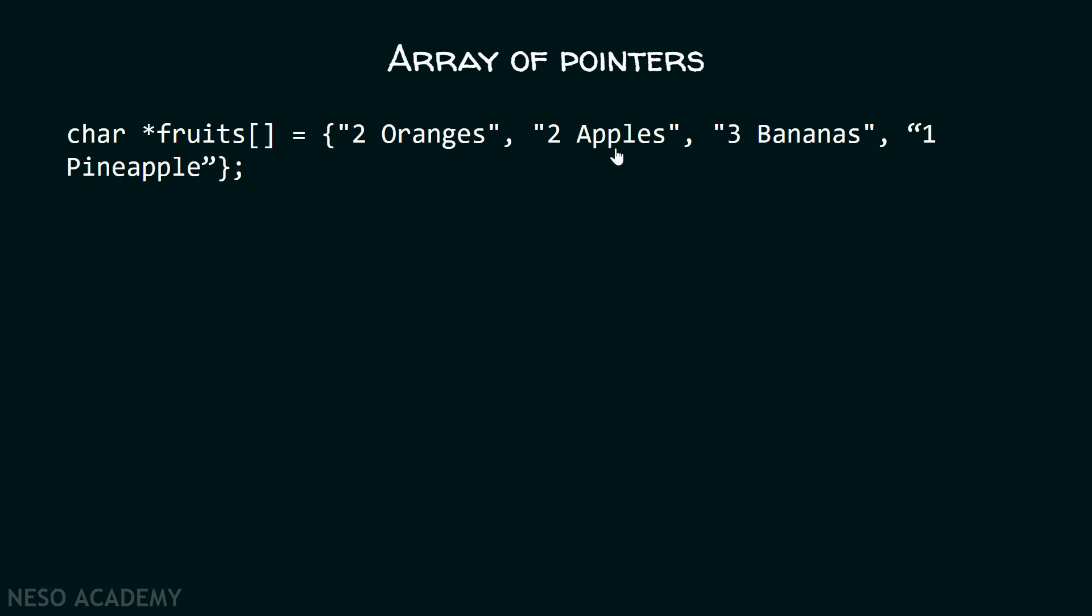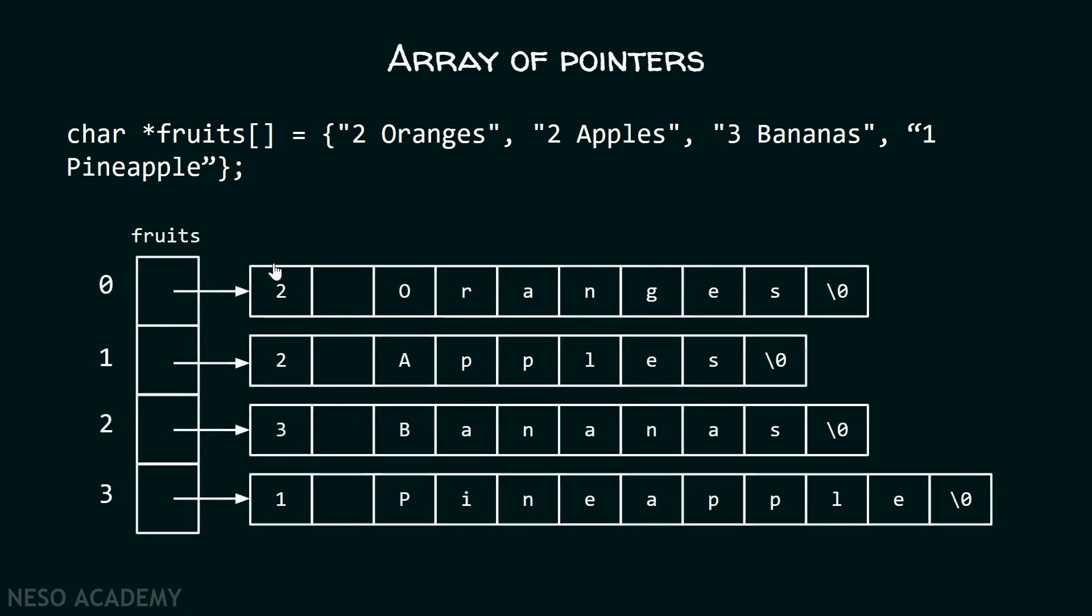Okay? And this is also applicable to the rest of the strings. So, actually we have a one-dimensional array of pointers. Now, here is how it can be represented. We have this one-dimensional array, which consists of all the pointers to the first character of the string literals. So, here, in this first block, the pointer to the first character of this string, two oranges, is stored. Similarly, in this block, the pointer to the first character of the string, two apples, is stored. Right? And here we can see that there is no memory wastage at all.